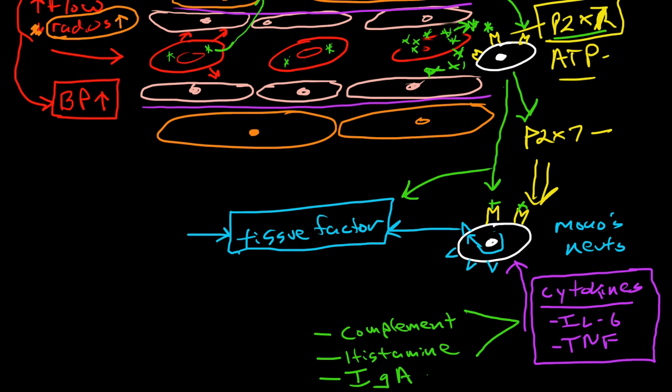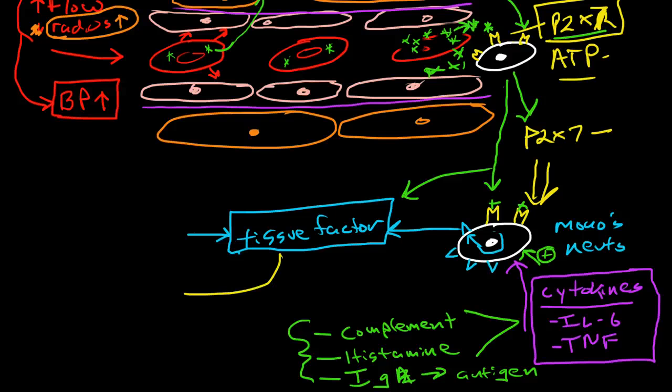and activated immunoglobulins. So immunoglobulin and antigen complexes. So any of these inflammatory pathways are going to initiate the secretion of cytokines. The cytokines are going to stimulate the monocytes and neutrophils to begin expressing tissue factor. And then tissue factor is going to start the extrinsic pathway.